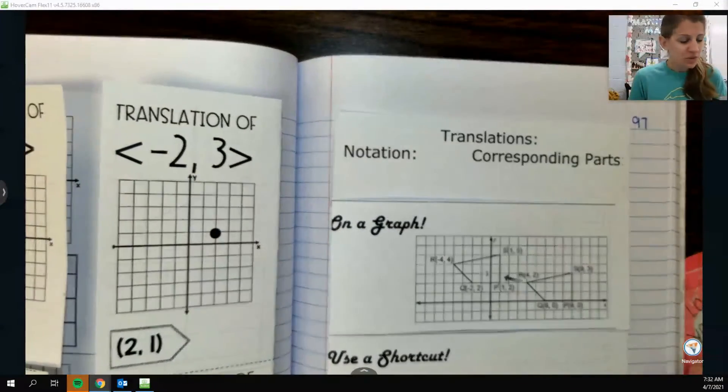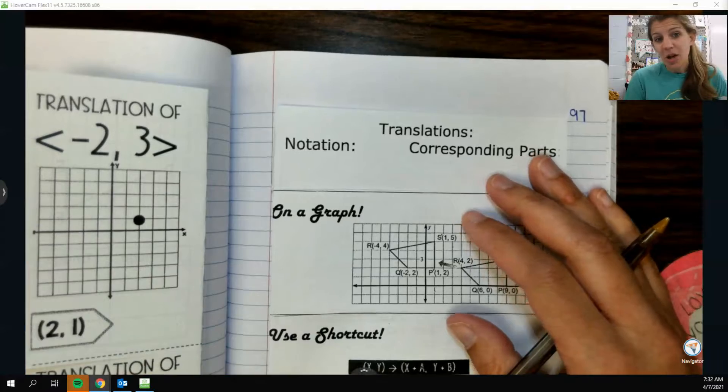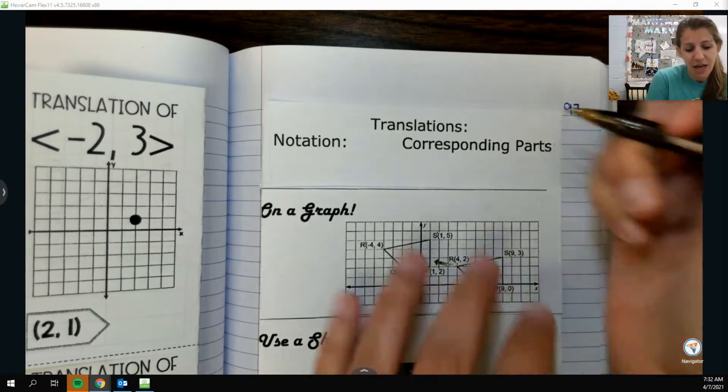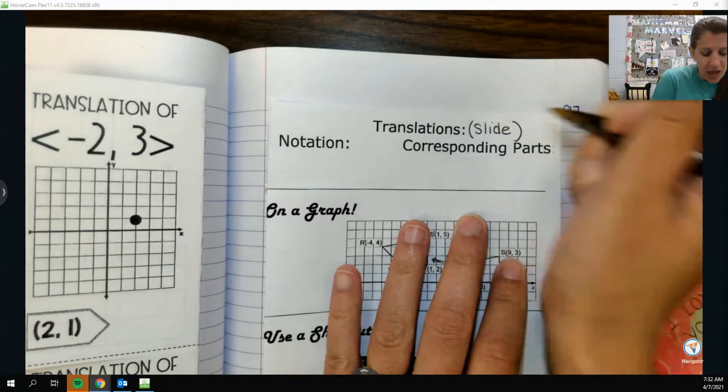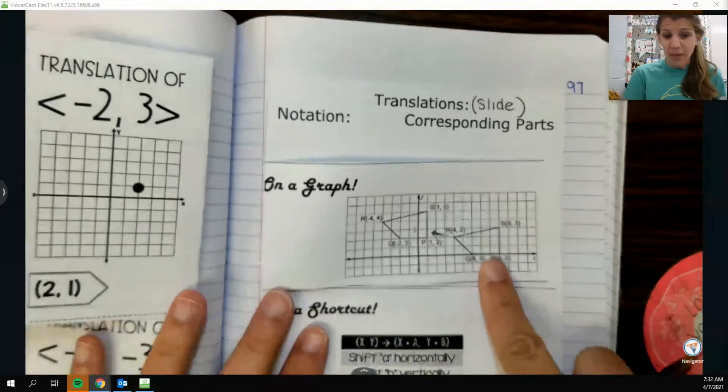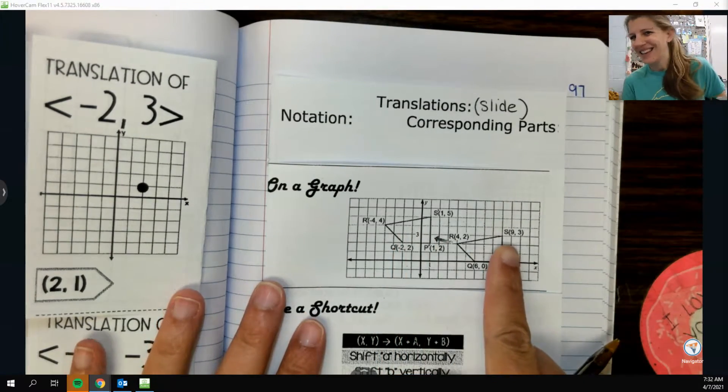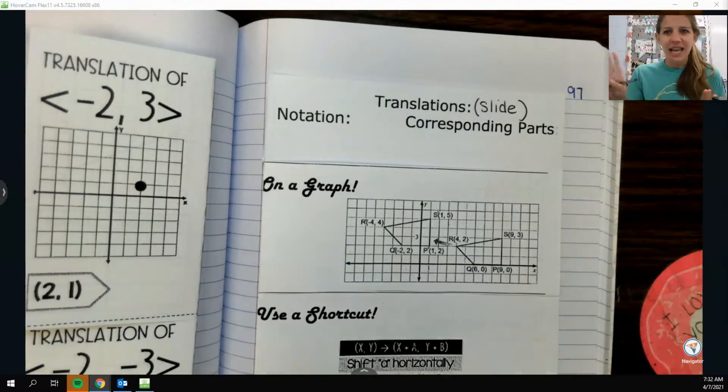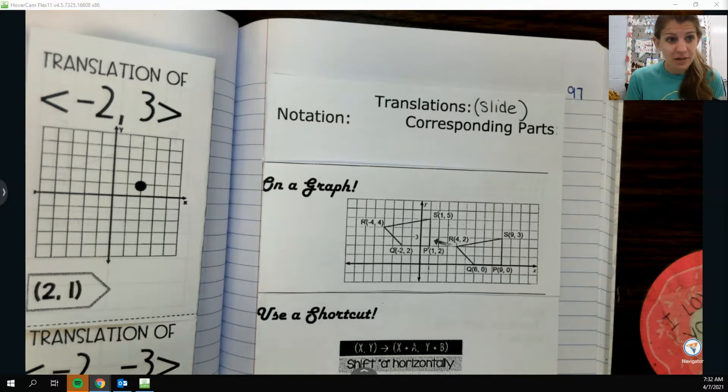Transformations is all-encompassing like anything that you might do to a shape is a transformation. A translation is a very specific one. A translation, another word for it would be a slide. If I have a shape on a graph and we slide to the left, slide to the right, or slide up, or slide down, just sliding that shape around, almost like you're laying it flat and then moving it around with your hand.